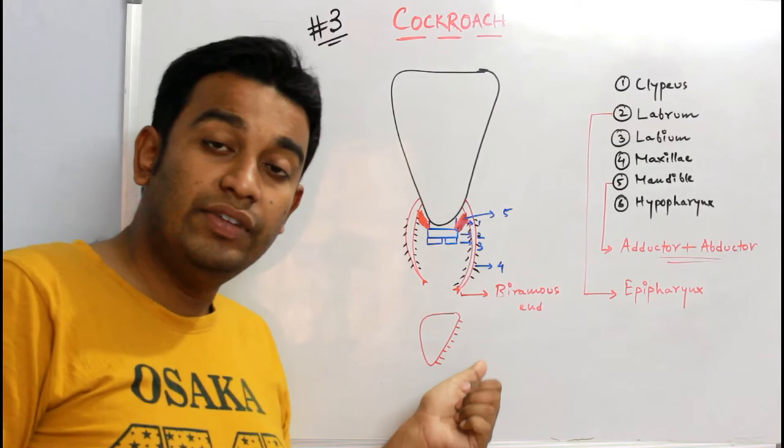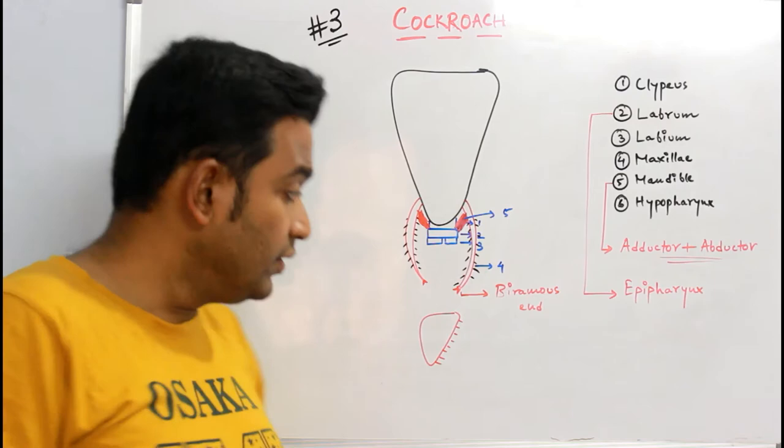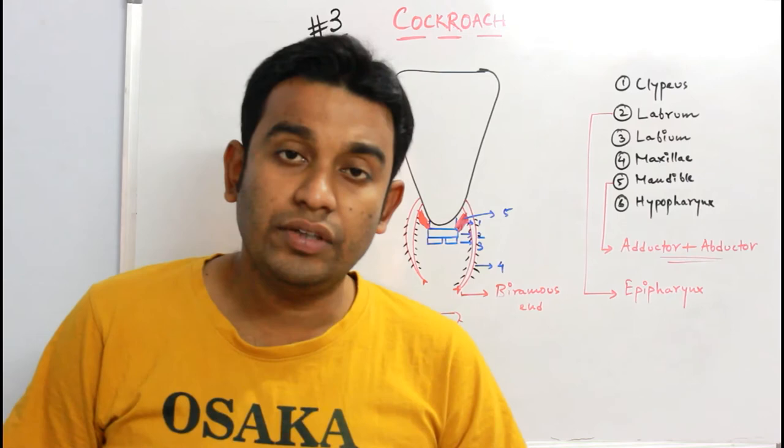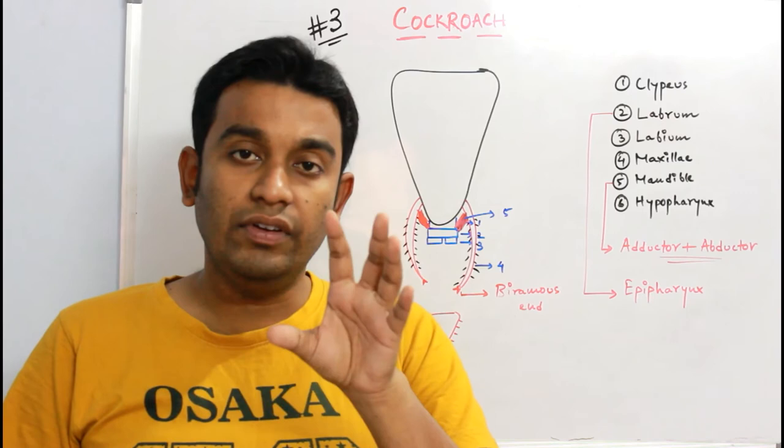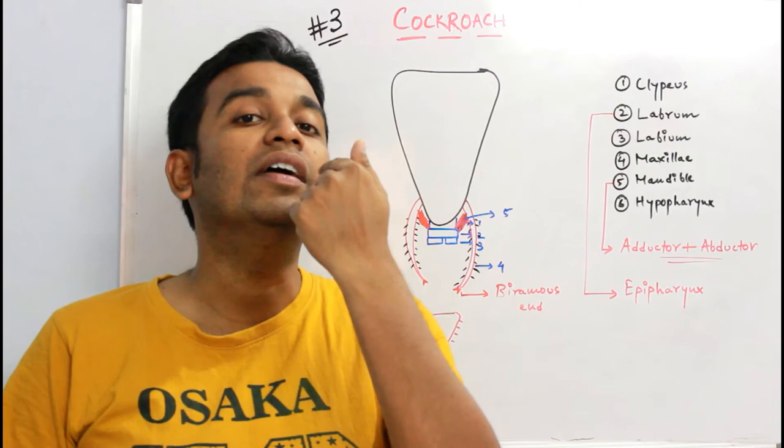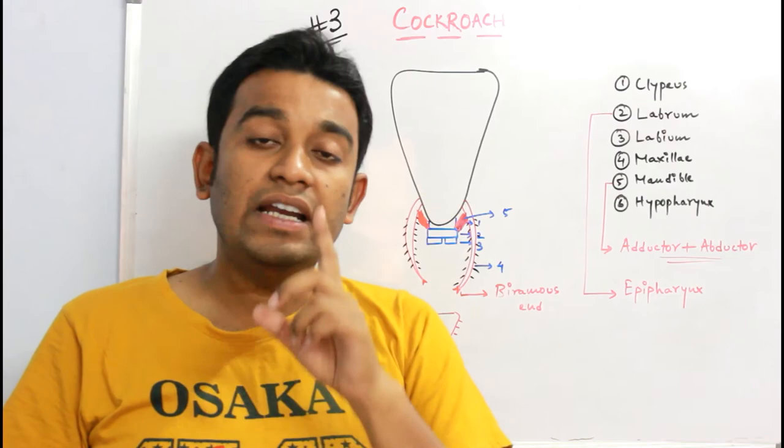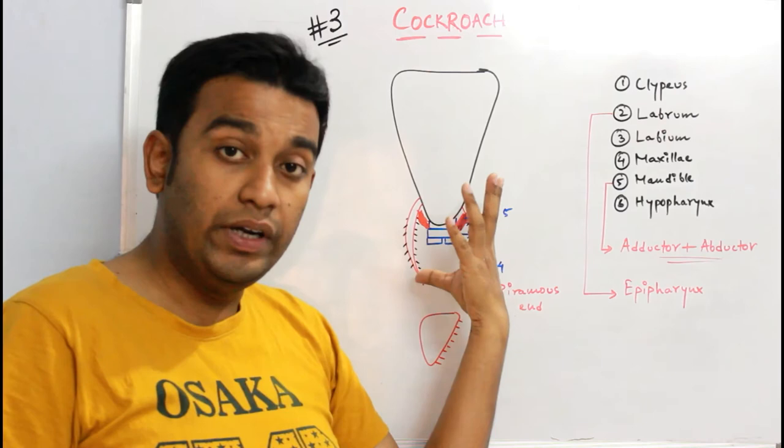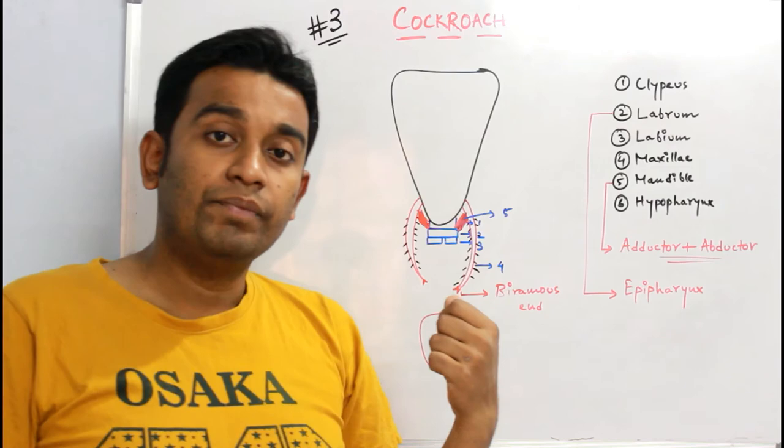Now the last part is the hypopharynx. It is regarded as a tongue-like structure. If you have ever observed yourself in the mirror by opening your mouth, you will see at the end of the buccal cavity there is a structure hanging like a pendulum. That is what you call as uvula. Similarly, since the mouth is not opened here, they also have the same sort of structure at the end of their buccal cavity which is called hypopharynx.